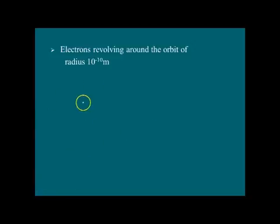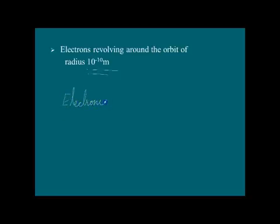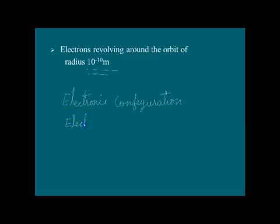The electrons revolving around the nucleus of an atom do so at a radius of 10 raised to minus 10 meters. These electrons have a specific electronic configuration, which we are going to study in detail. The electronic numbers differ from element to element. The properties of an atom because of its electrons are all included in physics.